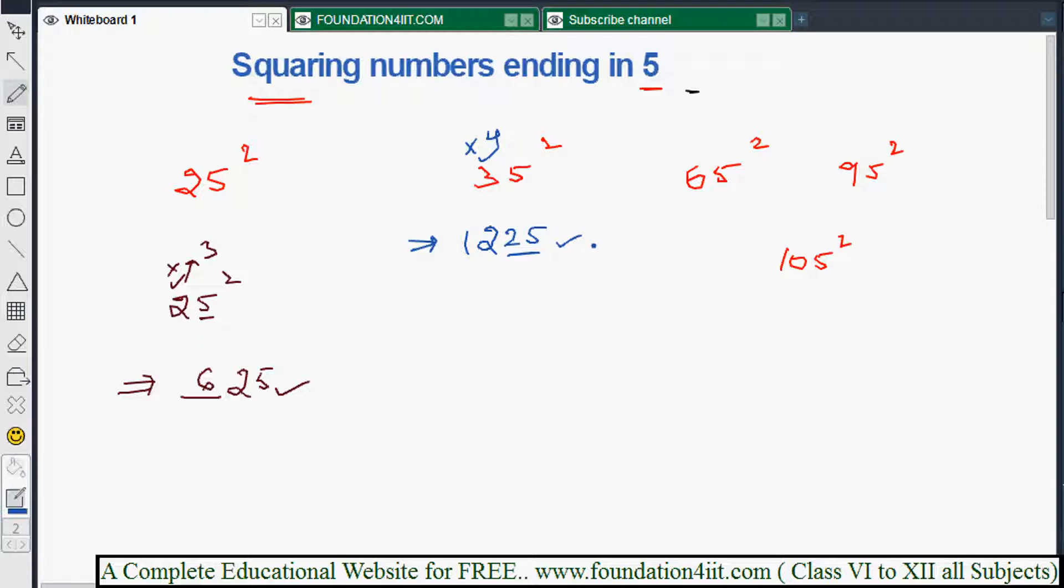Maybe 65 square. 65 square, what we write first is 6. So 6 into next number of 6 is 7. 6 into 7, just multiply. So 6 times 6 is 36, 6 times 7 is 42. 42 and 5 square is 25, just attach. So 4,225.